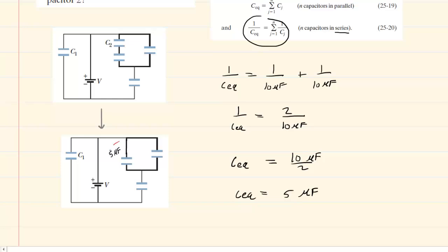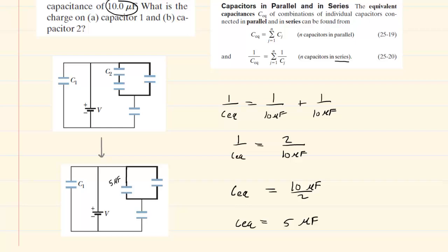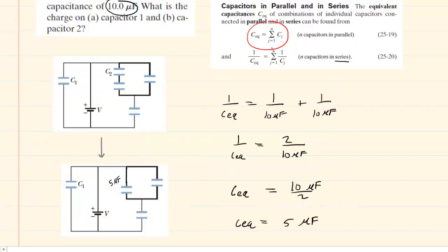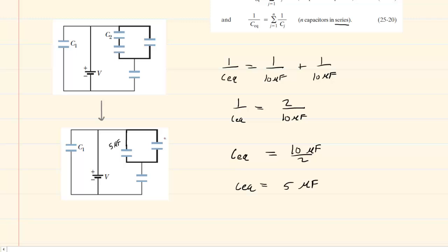We would next note that these two capacitors are in parallel with one another. When capacitors are in parallel, we can find the equivalent capacitance by simply adding together the capacitance values. We will combine these parallel capacitors by simply summing them. This one right over here is 10 microfarads, so the equivalent capacitance when we add them together will just be 15 microfarads. We'll go ahead and redraw the circuit.